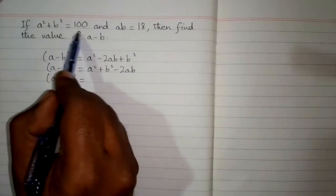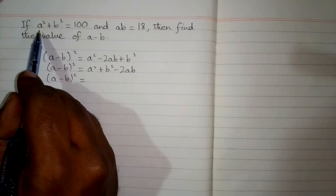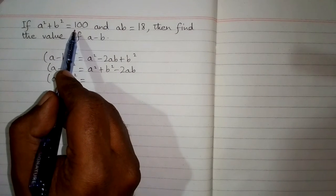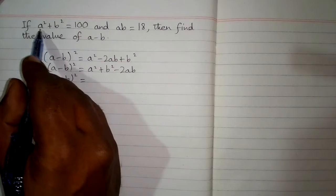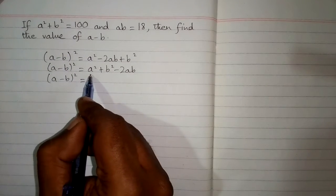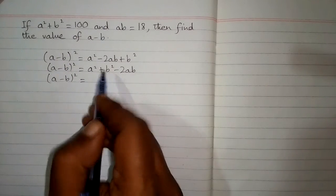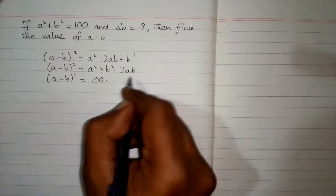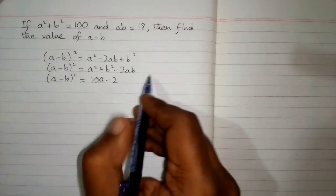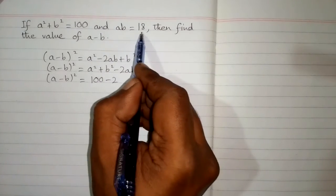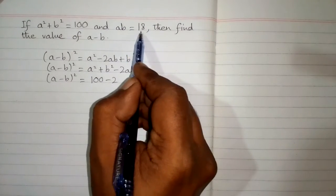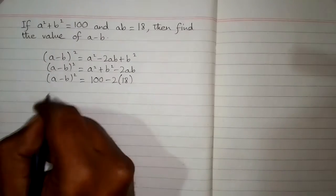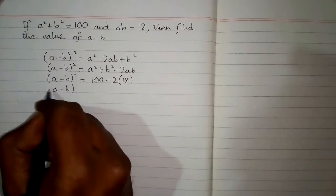We can see that the value of a squared plus b squared is given in the question as 100. So we put 100 in place of a squared plus b squared, then minus 2 times ab. The value of ab is given as 18, so we put 18 in place of ab.